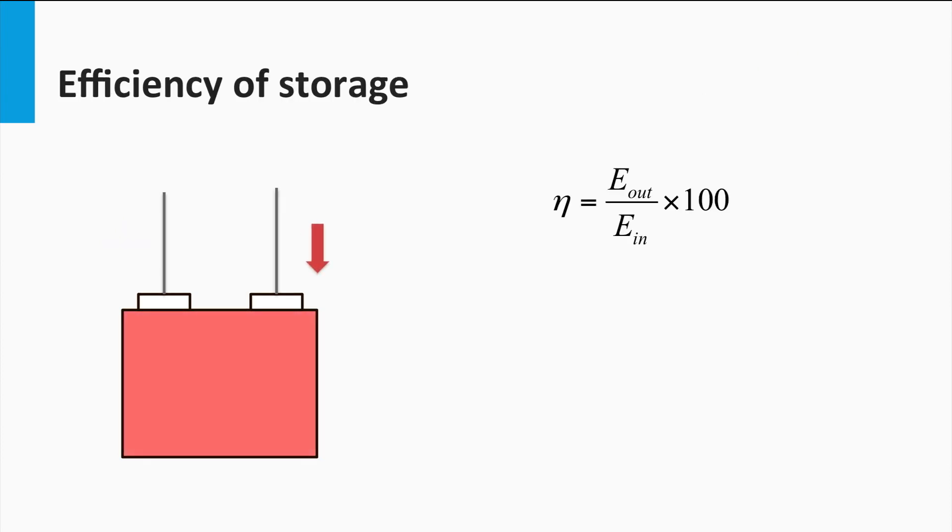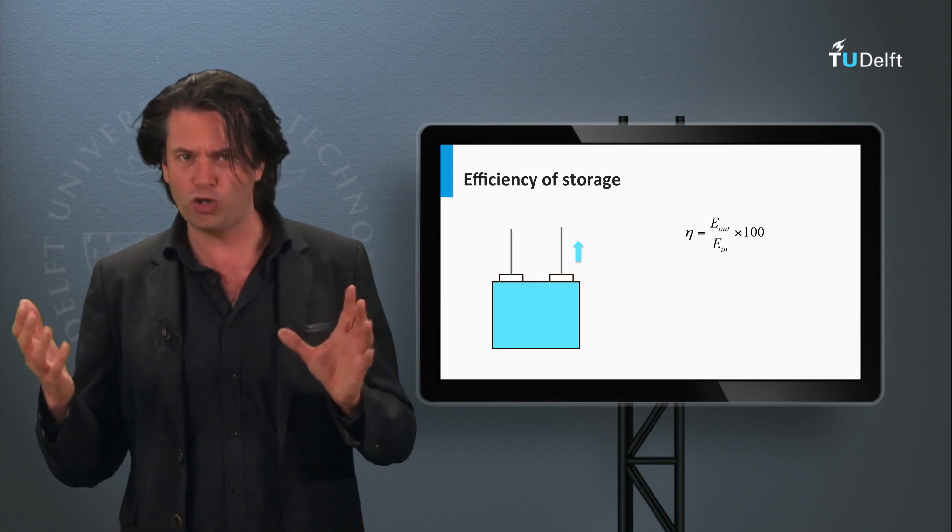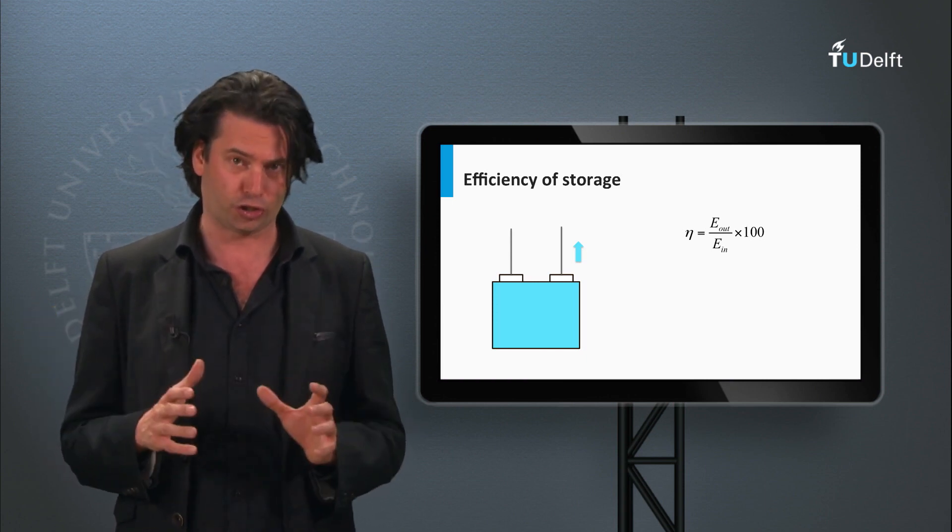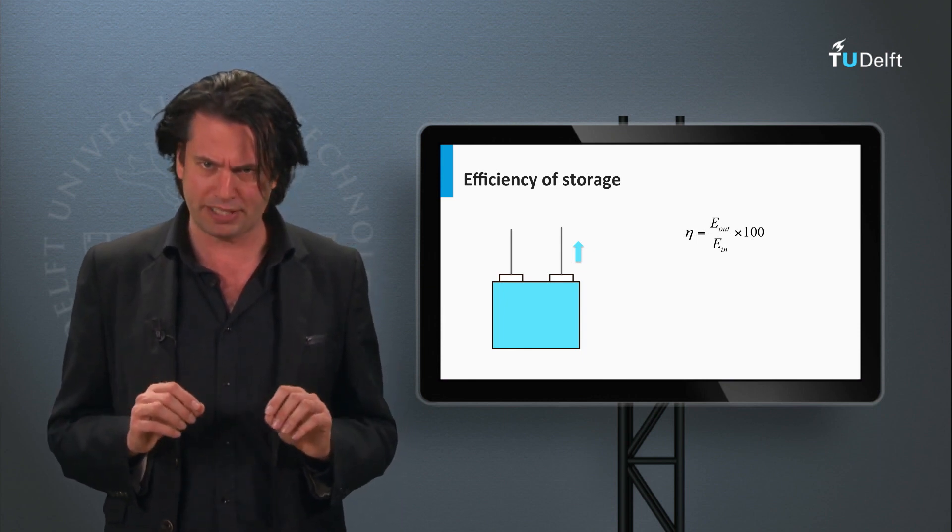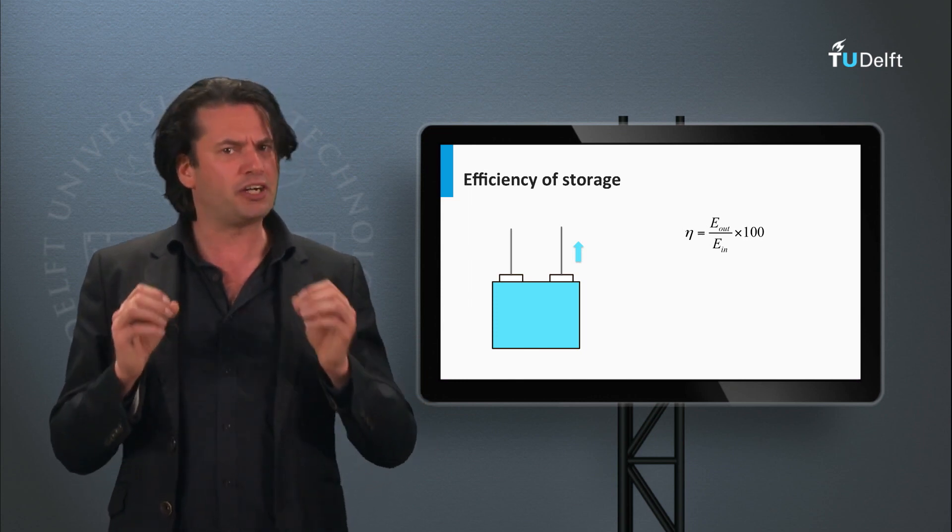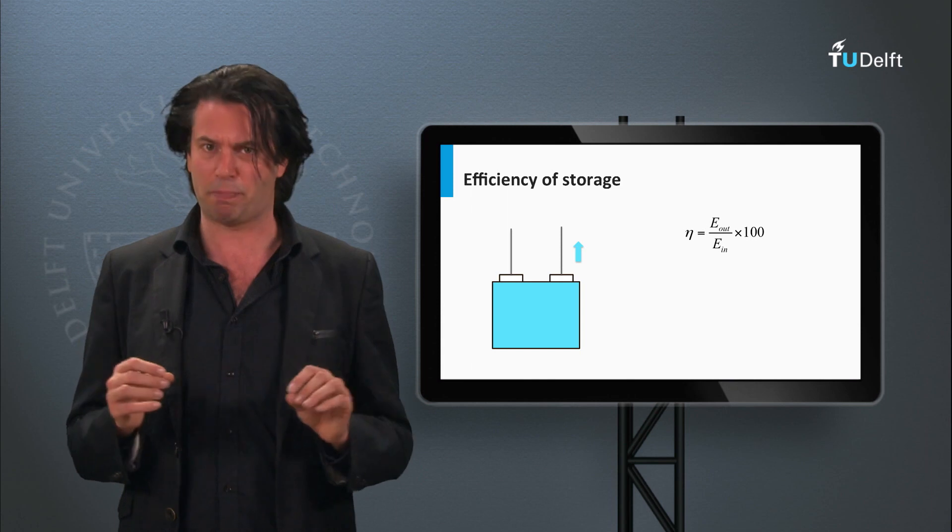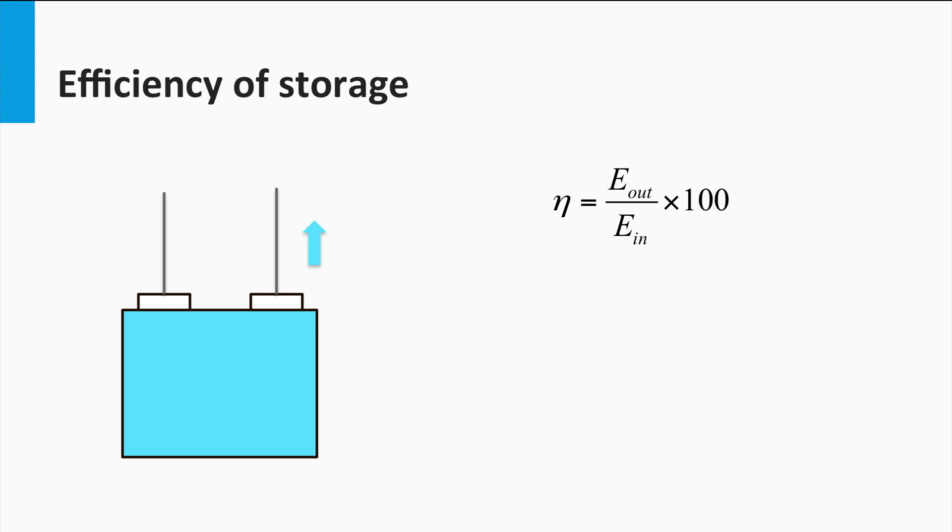Like every other component in the PV system, the efficiency of the storage system is also of high importance. In the last video you saw how we selected battery from a host of other storage choices. We said that the batteries, apart from the ease of implementation, offer some of the highest efficiencies. Usually for storage technologies we talk about round-trip efficiencies. In simple terms, it is the ratio of total storage system input to the total storage system output.